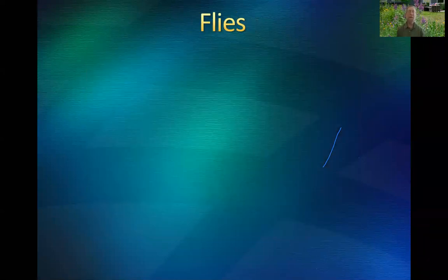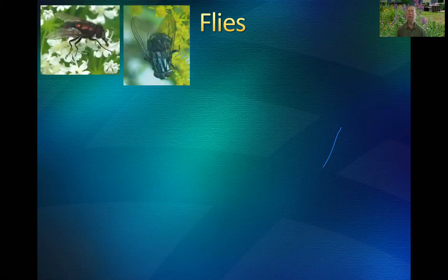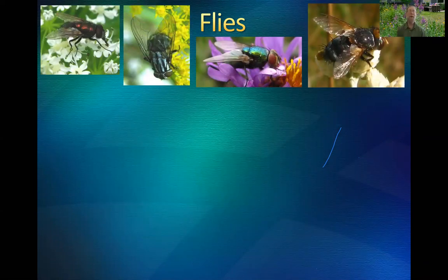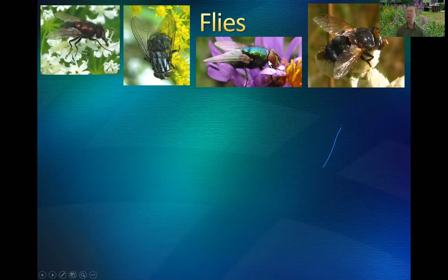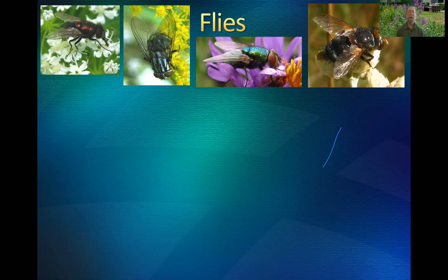Then we get to flies. I used to think of flies as those things you swat before they land on your picnic lunch. But even many of these flies — this green blowfly or green bottle fly in particular — is a very efficient pollinator. One entomologist told me that fly is more effective at pollinating onions and cabbages than any bee is. So don't discount flies as pollinators.